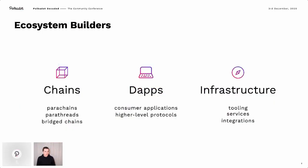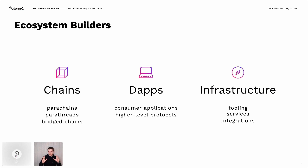As a start, just to get some terminology out of the way and have a common understanding of what we're talking about: if you look at the Polkadot ecosystem and zoom out far enough and look at who's actually contributing code, who's actually building stuff, there are three big categories.